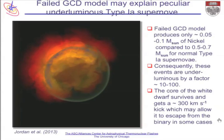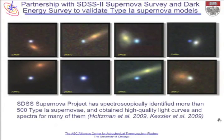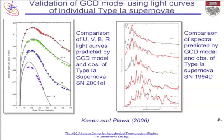This is a failed gravitationally confined detonation model, and we find that it leads to peak luminosities 10 to 100 times lower, with characteristics very similar to some very exotic supernovae that have not been explained until now. We have partnerships with astronomers conducting big surveys that are actually observing hundreds of supernovae of this kind for us to use to validate the model, and you can compare our models with individual supernovae and they do pretty well.